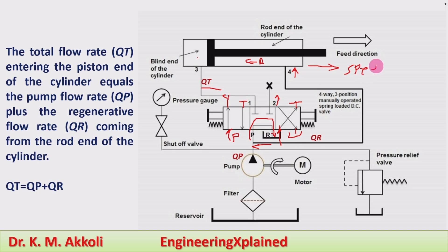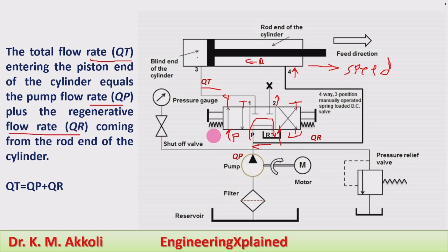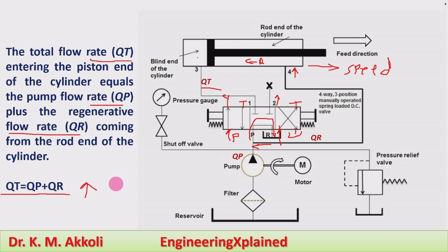To increase the speed we are going to use this regeneration type of cylinder. The total flow rate QT entering the piston end of the cylinder equals the pump flow rate QP plus the regenerative flow rate QR, which is returning from the rod end of the cylinder. Therefore QT = QP + QR. As the flow rate is higher the speed will be higher, so in order to have higher speed of extension when the return stroke has normal speed, we are going to use this regenerative cylinder circuit.